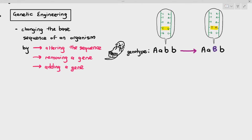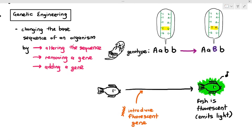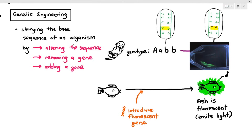Another example of genetic engineering: you have a fish and you introduce a fluorescent gene into it. A fluorescent gene, when expressed, allows the organism to produce specific proteins that cause the organism to glow. Because the fish now has a new gene introduced into its cells, the fish is now fluorescent and able to emit light. This is a very simplistic approach to what genetic engineering is all about.